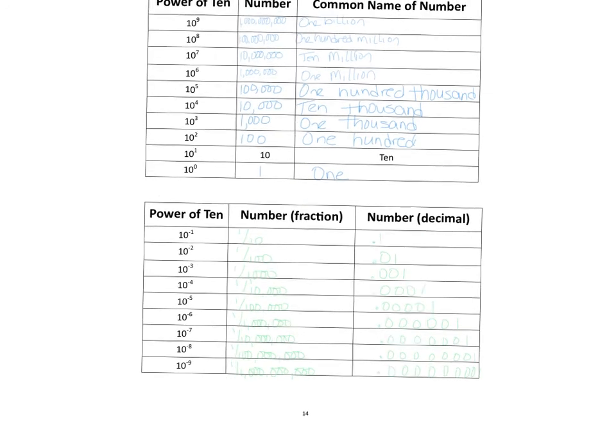Notice how the exponent relates to the number of zeros included in the number, because that's going to be very important regarding scientific notation. Notice that numbers with positive exponents got very big, whereas numbers with negative exponents were very, very small.